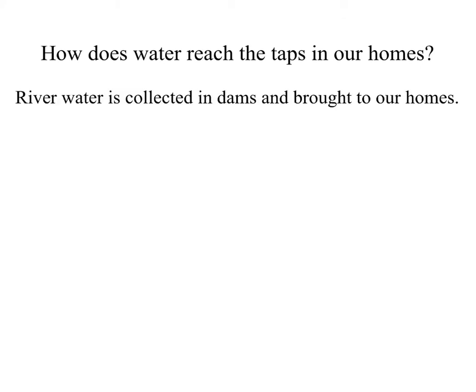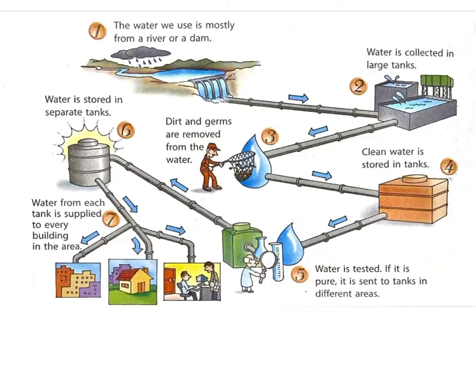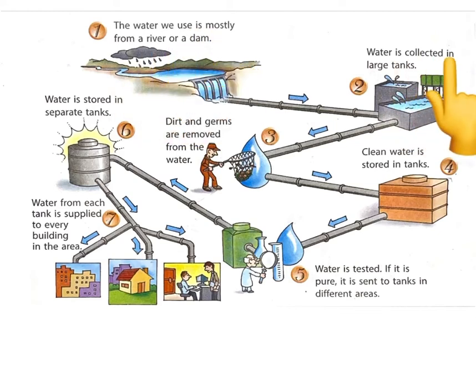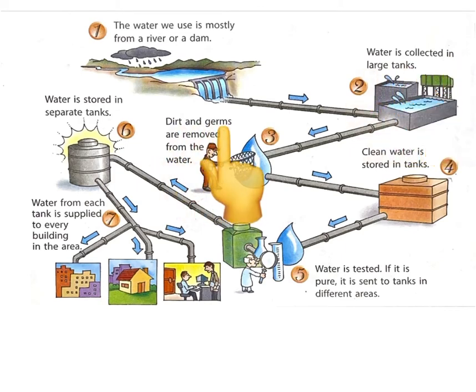How does water reach the taps in our homes? River water is collected in dams and brought to our homes. Look at the picture. The water we use is mostly from a river or a dam. Water is collected in large tanks, and dirt and germs are removed from the water.